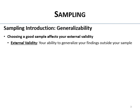Generalizability is important for sampling. Choosing a good sample affects your external validity. External validity is your ability to generalize your findings outside of your sample — the extent to which you can generalize your findings to other people.